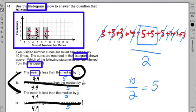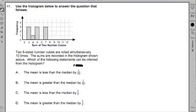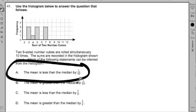So the mean here is less than the median by one-tenth. All right, team, so our answer here, when we go about it, we get to the mean is less than the median by one-tenth.